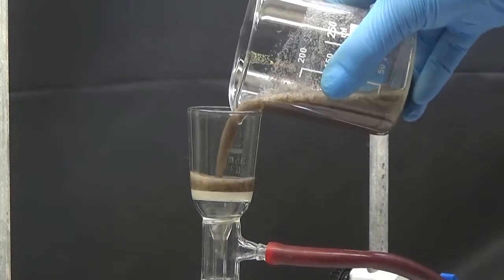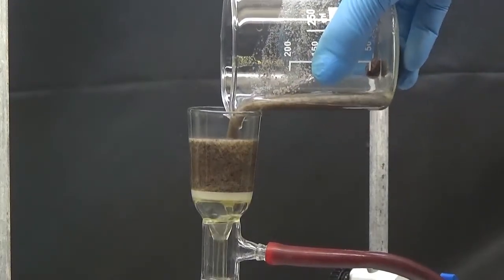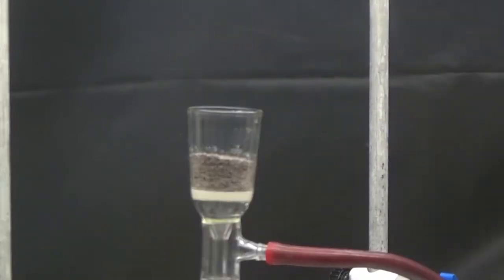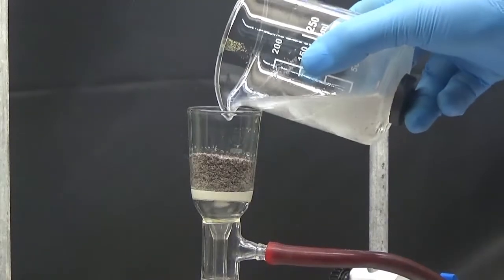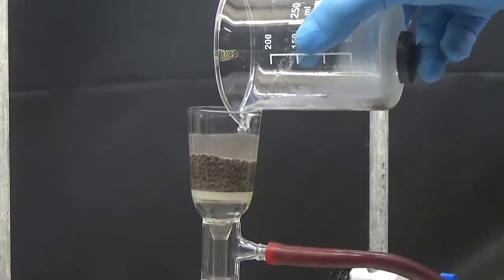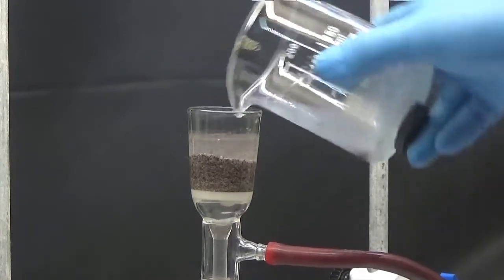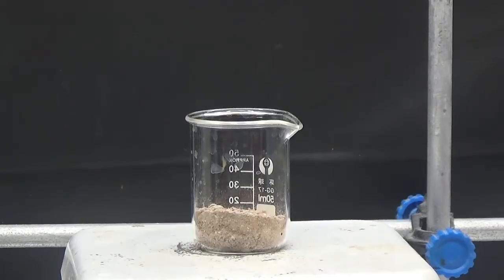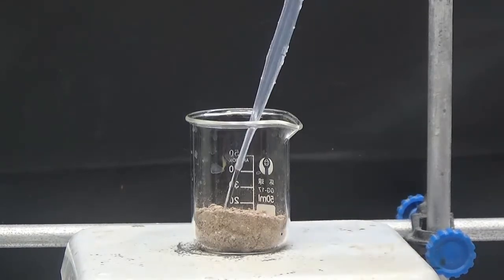Collect the solid by suction filtering. Clean with cold water twice. Dry the solid at 60 degrees celsius in an oven.